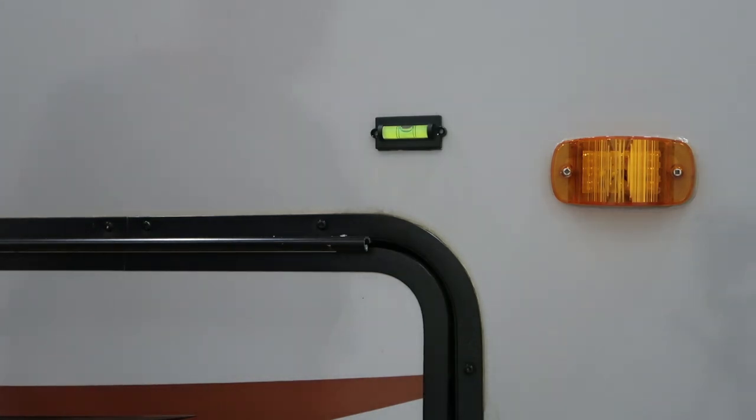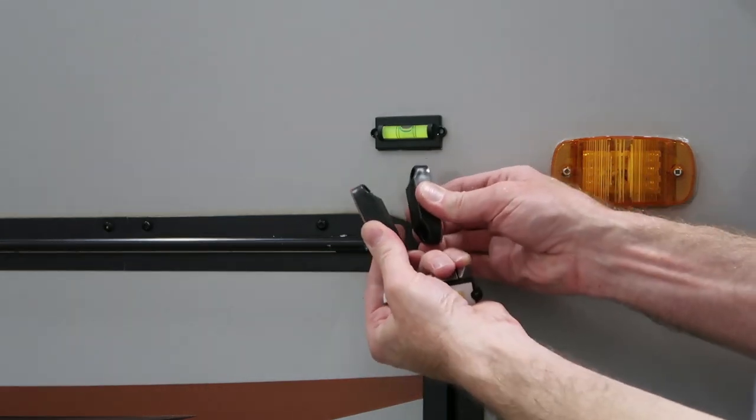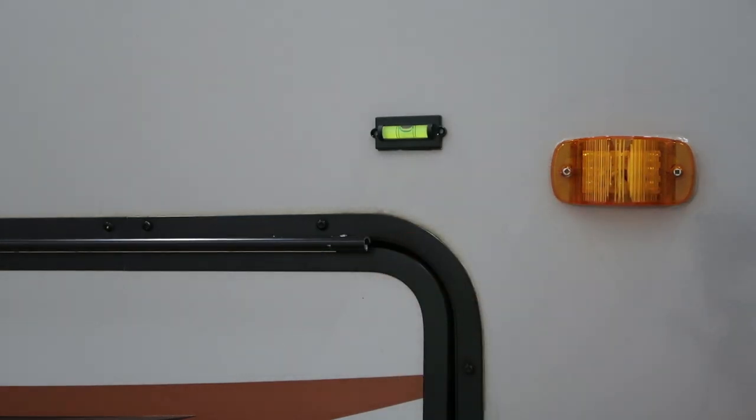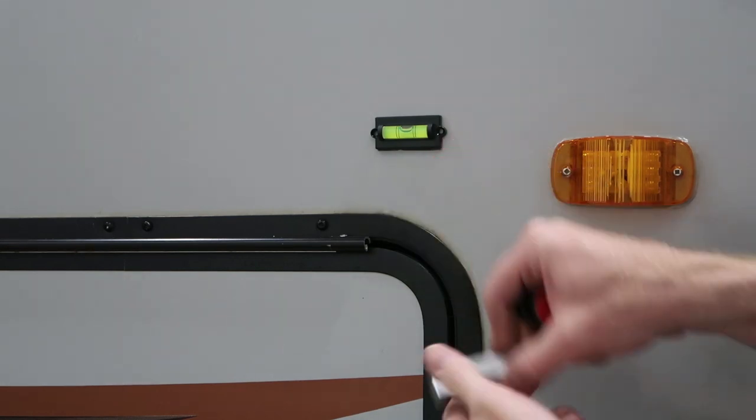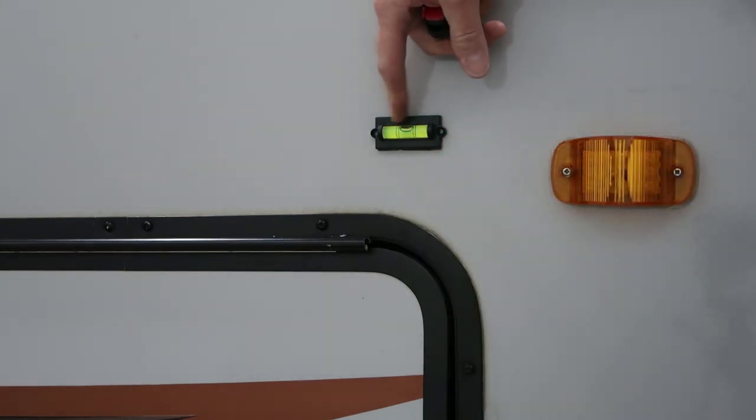Newer RVs are using a magnetic system on the cargo doors. It consists of two pieces. So what I did was took this off, which is right here, and then I sealed up the two holes and used some self-adhesive tape to attach the bubble level.